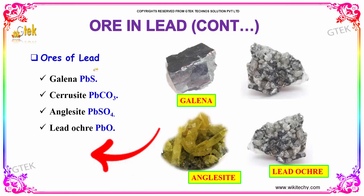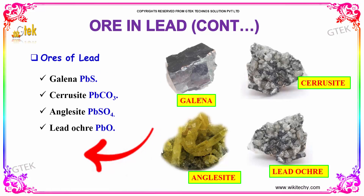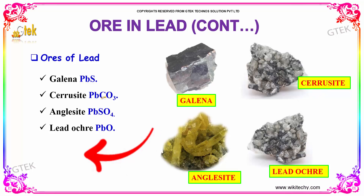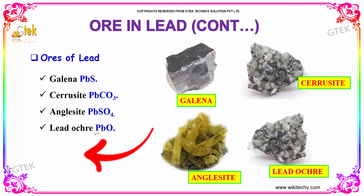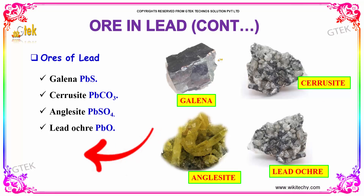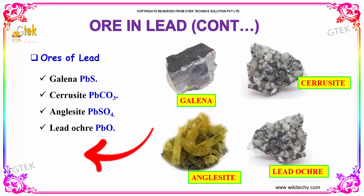Here are the ores of lead. The first one is galena — that is lead sulfide. Cerussite — that is lead carbonate. Anglesite — that is lead sulfate. And lead ochre — that is lead oxide. These are the ores naturally available in the earth, and from them we will be extracting lead.